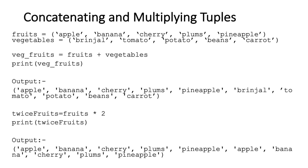For multiplication of tuples, I want to multiply the fruits tuple by 2. I create a new tuple: twice_fruits = fruits * 2. The output shows the elements of the fruits tuple doubled: apple, banana, cherry, plums, and pineapple, followed by the same elements again — apple, banana, cherry, plums, and pineapple. This is how we multiply the elements of a tuple using the asterisk operator.